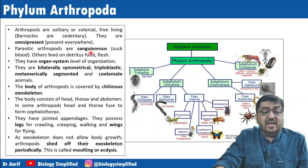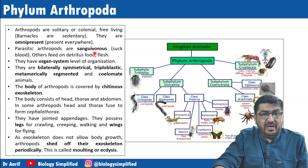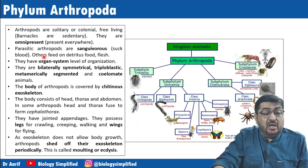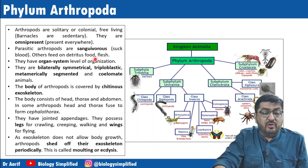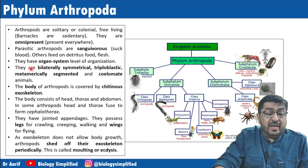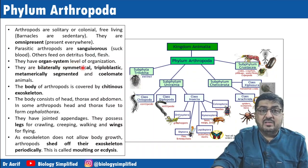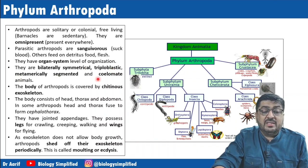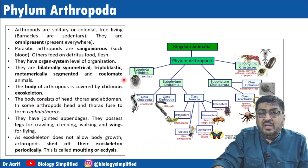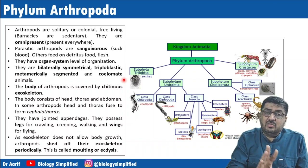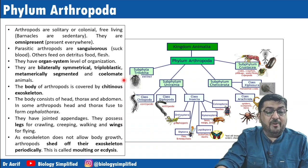Others feed on detritus food or flesh depending on their mode of nutrition. Again we have organ system level of organization, bilateral symmetry, triploblastic, metamerically segmented, and coelomate. Note that only Annelids and Arthropods are metamerically segmented — no other phyla have this characteristic.